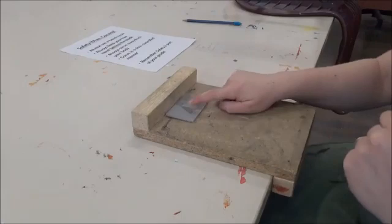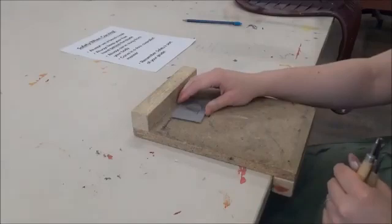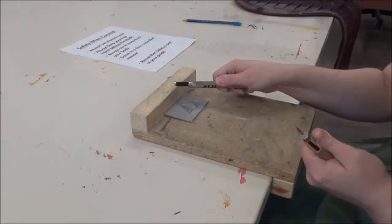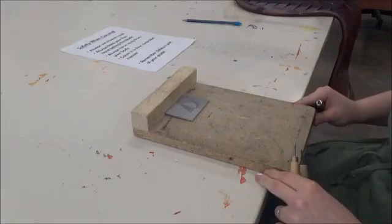We've started. You'll notice this is called a bench hook. Whenever you carve, you must always put your linoleum square against the bench hook. That way, whenever you're carving away, your hands aren't going to accidentally slip and plunge into someone's hand. So you always want to have your bench hook attached to the end of the table.